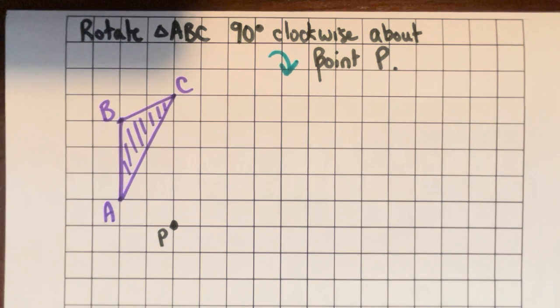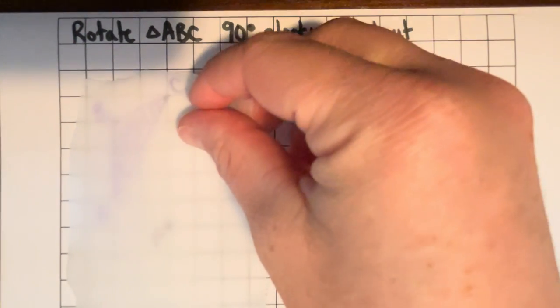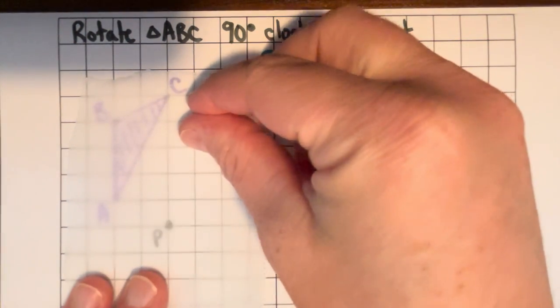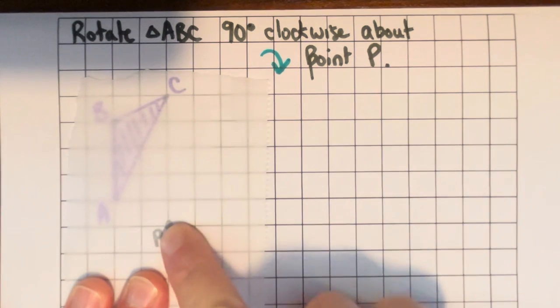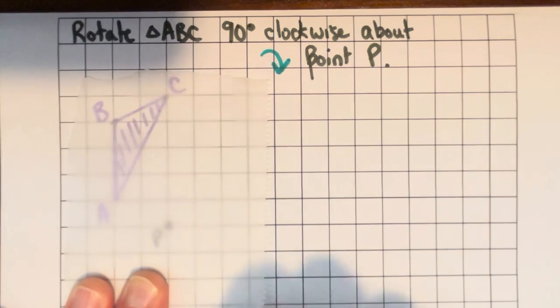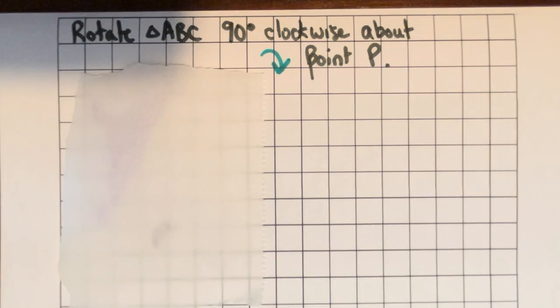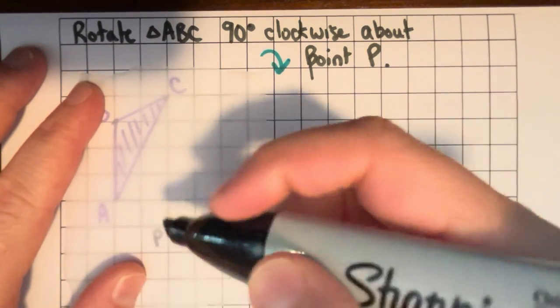Alright, so here's how we can do a question like this. Take our tracing paper and lay it over top of all the relevant stuff. So we need point P on there plus our triangle. And I'm going to use a sharpie to trace those.